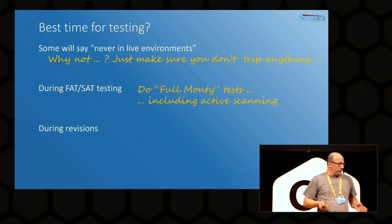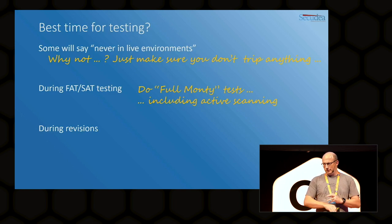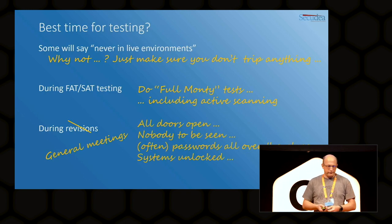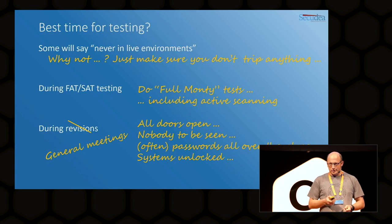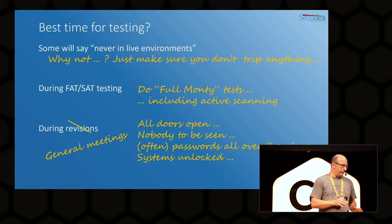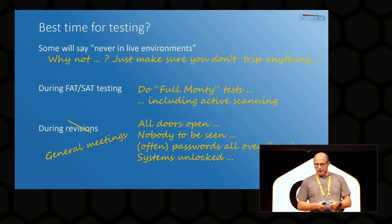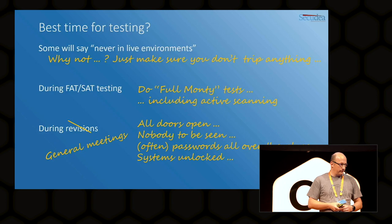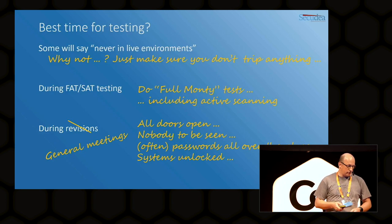During FAT/SAT testing I always say do full security testing during FAT — including active testing on every single device within factory acceptance testing. During revisions I used to recommend testing then, but now I say during general meetings: general meetings with unions, general meetings with management. Why? Because everything is wide open — if they don't have a policy of shutting doors, badging, or anything else, everything is wide open, nobody to be seen, passwords all over the place, systems unlocked.